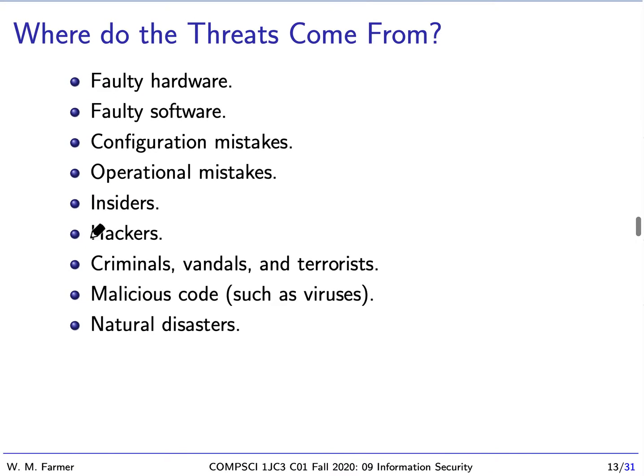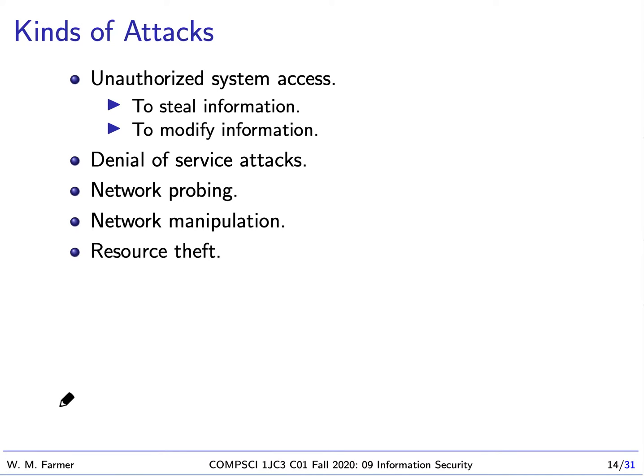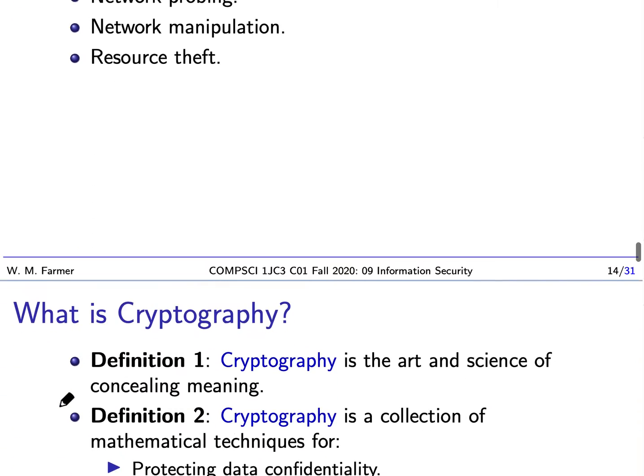These threats come from many different places: faulty hardware, faulty software, configuration mistakes, operational mistakes. They come from insiders within an organization, hackers who break into systems, criminals, vandals, and terrorists, as well as malicious code such as viruses and natural disasters. The different kinds of attacks include unauthorized system access to steal information — which violates confidentiality — or to modify information, which violates integrity. You can have denial of service attacks, which violate availability, network probing to understand how someone's network works, network manipulation to change how the network is structured, and resource theft.